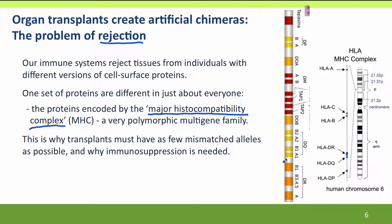Each gene in the major histocompatibility complex exists in many different alleles. So just like with DNA fingerprinting, there are many different combinations of alleles that different people inherit — two different versions, one from mom and one from dad — so people are never completely identical unless they're twins. Because these are a primary target of the immune system, transplants must match as many alleles as possible between donor and recipient. Because they can't all be matched, immunosuppression treatment is also needed to damp down the immune system and prevent the recipient's immune system from destroying the transplant.